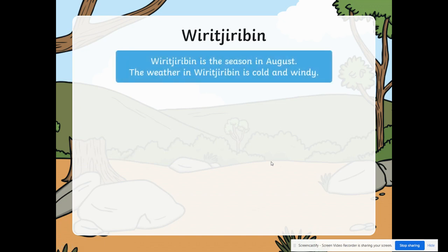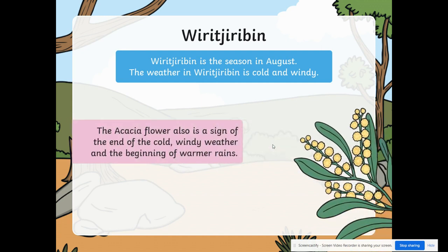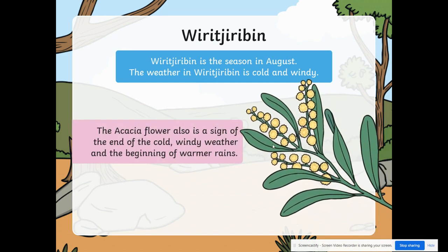Wirit jiribin is a season in August. The weather in Wirit jiribin is cold and windy. The acacia plants begin to flower again, which is a sign that the fish in the rivers are back and ready to be hunted. The acacia flower is also a sign of the end of the cold windy weather and the beginning of warmer rains.